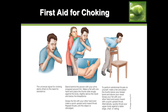The Heimlich maneuver: stand behind the person, make a fist with one hand and place the thumb side snugly against the body slightly above the navel but below the breastbone - not on the ribs. Grasp the wrist with your other hand and do a quick upward and inward thrust. This forces the remaining air in the lungs to expel the piece of food. If you're alone and choking, throw yourself over the back of a chair - it may hurt but cracked ribs are fine compared to dying from lack of oxygen.